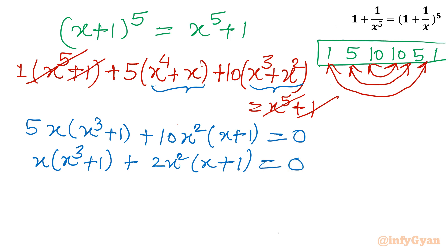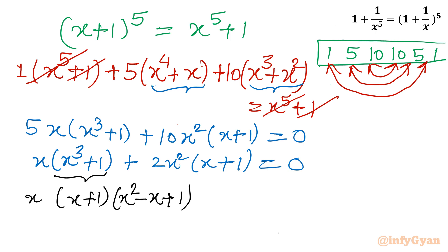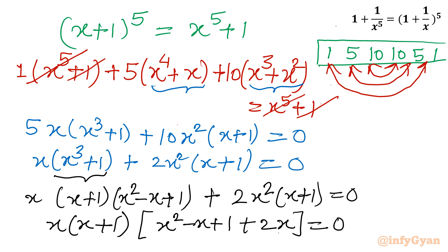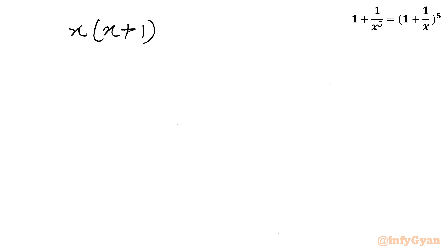Dividing through by 5 gives x(x³ + 1) + 2x²(x + 1) = 0. Now applying the algebraic formula a³ + b³ = (a + b)(a² − ab + b²) to x³ + 1 gives (x + 1)(x² − x + 1). So the equation becomes x(x + 1)(x² − x + 1) + 2x²(x + 1) = 0. Taking x(x + 1) as common factor gives x(x + 1)[(x² − x + 1) + 2x] = 0, which simplifies to x(x + 1)(x² + x + 1) = 0.